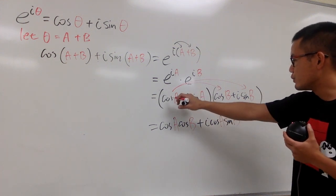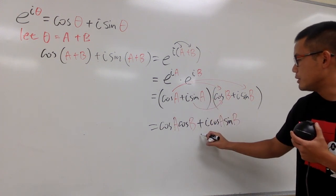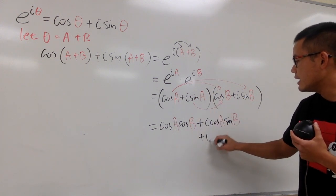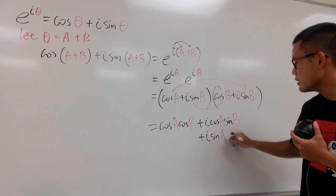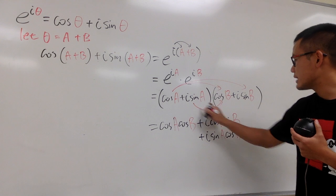And then I finish with the cosine a already, so let me go ahead and do this times that, which is, let me put it down here, plus i, and then here we have the sine a, cosine b.